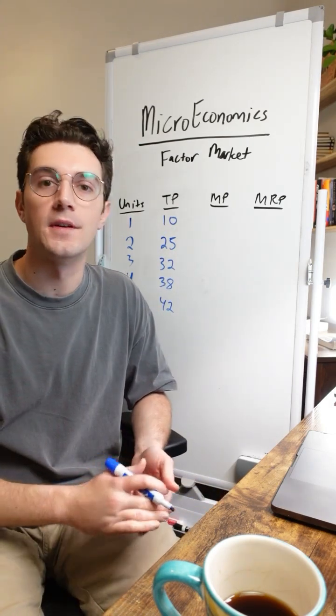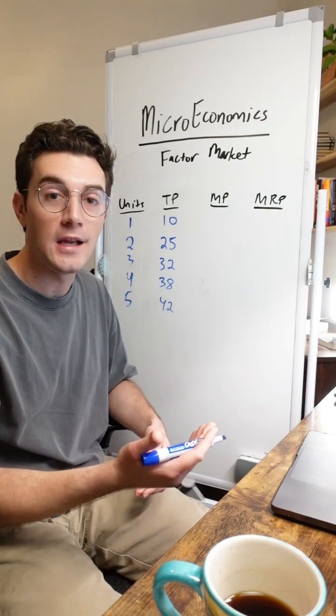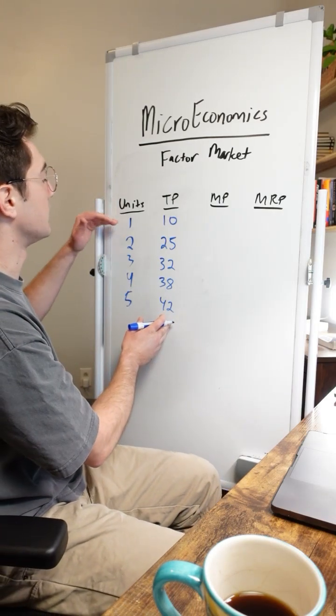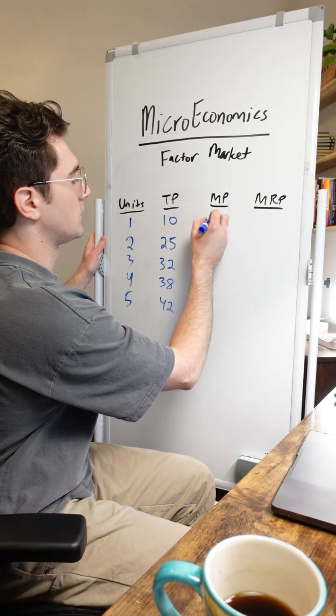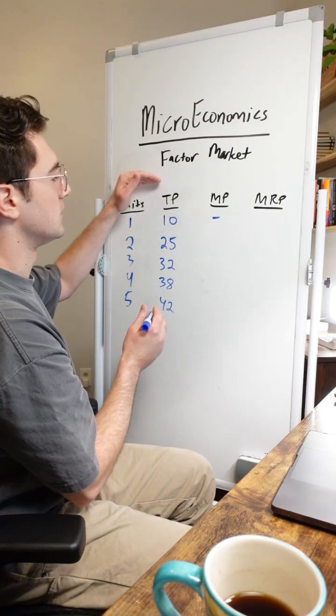This is no different than marginal benefit or marginal cost. We're just going to find the change in total product that a given unit of machinery generates. The first unit is just going to be a dash because there's not a previous unit to compare it to.